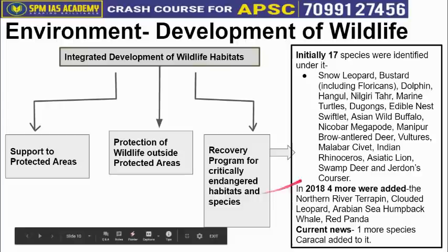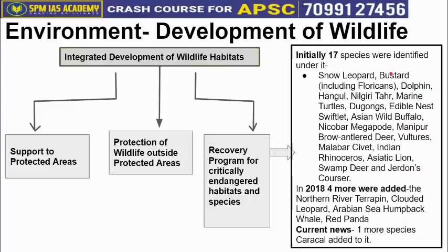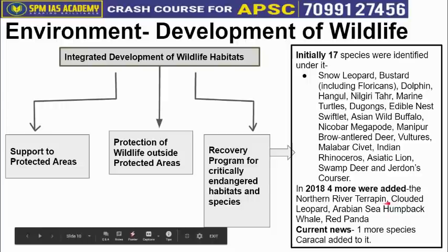You don't need to memorize all 17 names. In 2018, four more species were added: River Terrapin, Clouded Leopard, Arabian Sea Humpback Whale, and Red Panda — these four were added in 2018.